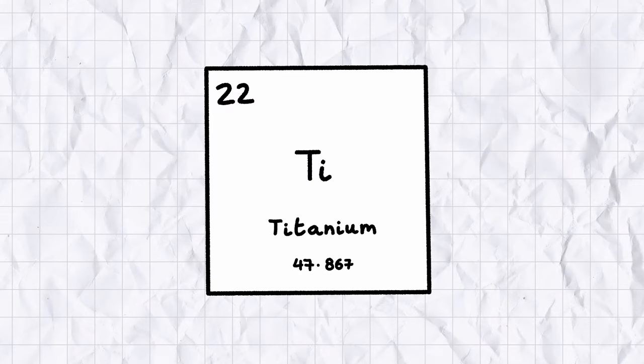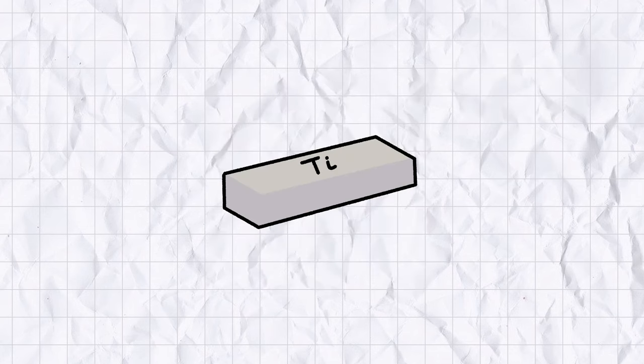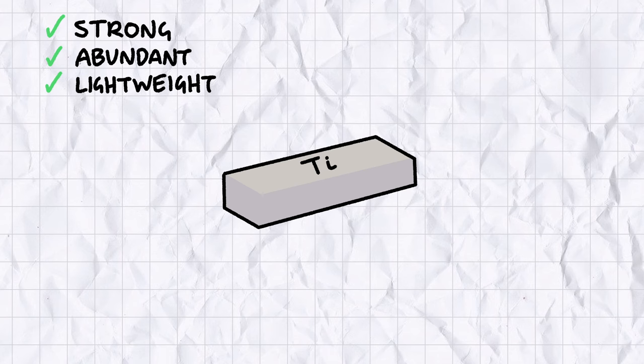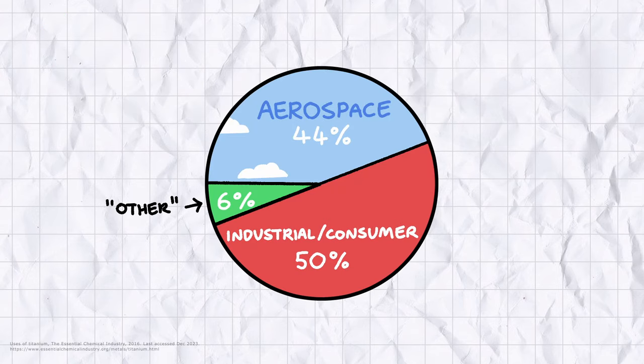Titanium is the first member of the Transition Metals, and boy, what a first member it is. Titanium metal is strong, abundant, lighter than iron, less dense than aluminium, and if you rearrange its name, you can make I Am Nutty, which isn't useful, but I thought it was pretty neat.